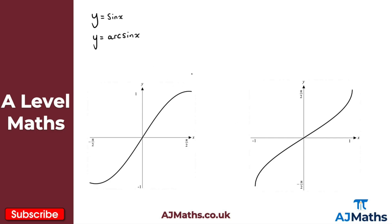Below we have two graphs. The first one you might recognize — this is y equals sine x. It might look a little different because we've restricted the domain, which now goes from minus pi over two to pi over two. We've done this so that we have a one-to-one function, and hence the inverse will exist.